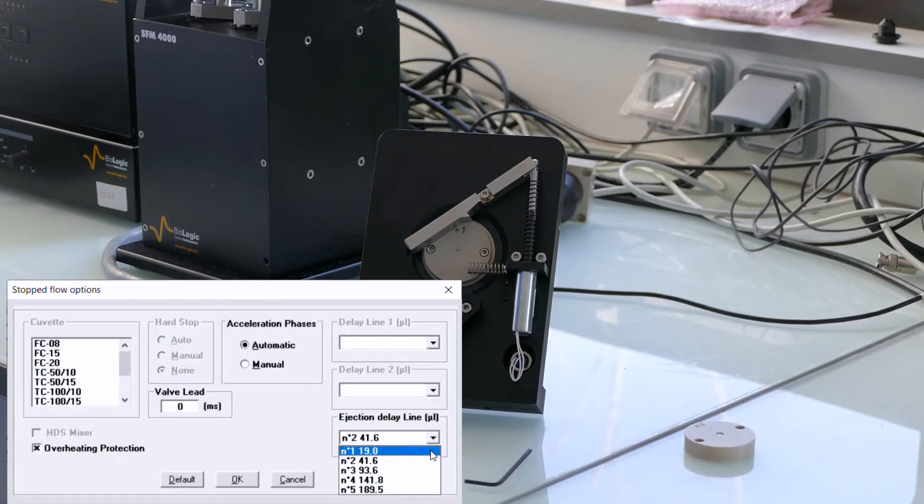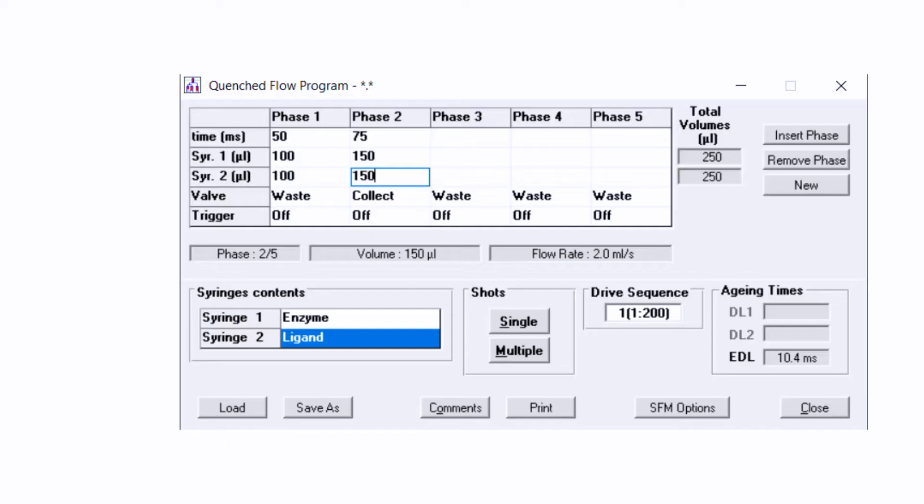Make sure the right delay line is selected in the software and design the mixing sequence by indicating the volume to mix and the aging time you want to reach.